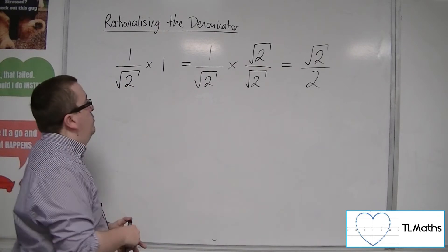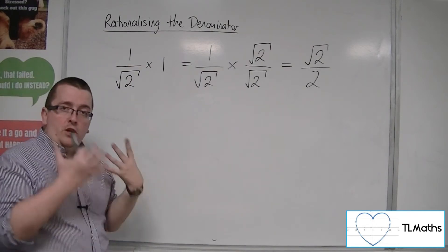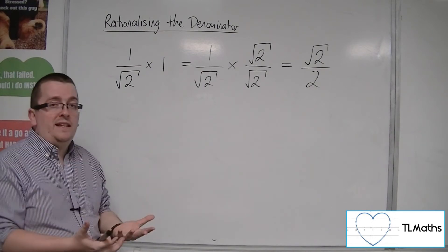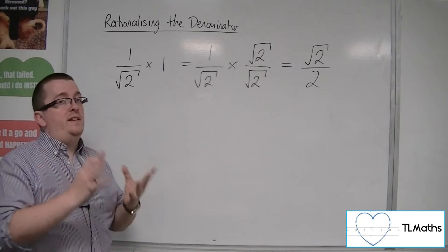Now, back to the original problem, 1 divided by root 2 is very challenging. Even if you know that root 2 is out to 8 decimal places, 1 divided by that number is a very difficult thing to do.